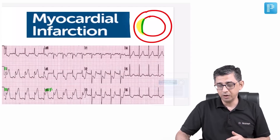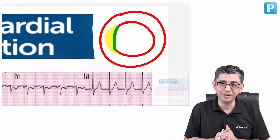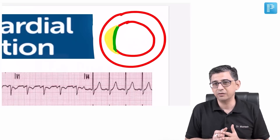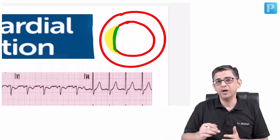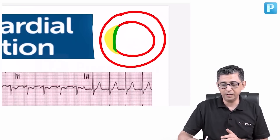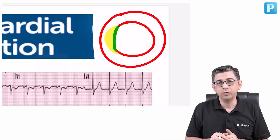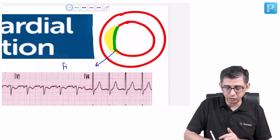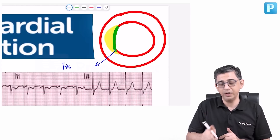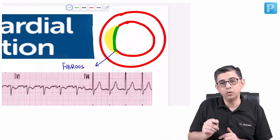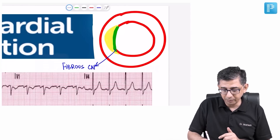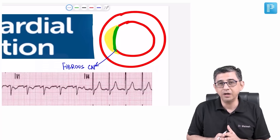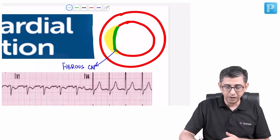Let's look at what actually happens during myocardial infarction. If I zoom in, this can be taken as a cross-section of any coronary artery — left anterior descending, left circumflex, or right coronary artery. The yellow area is the fat deposition, or lipid core, and the green area superiorly is the fibrous cap. Atherosclerosis involves two things: a lipid core within the tunica intima, covered by a fibrous cap.